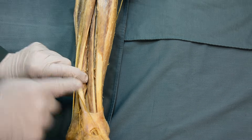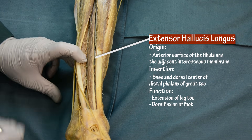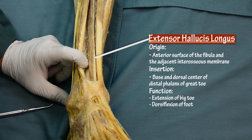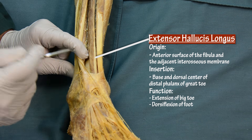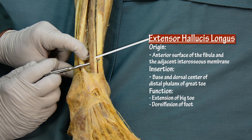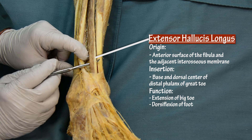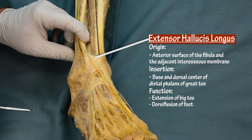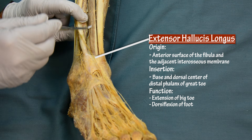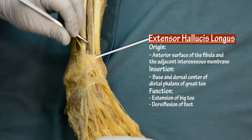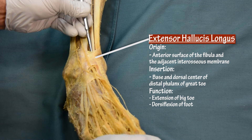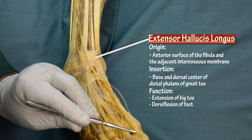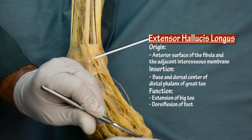The next muscle is the extensor hallucis longus. How do we know that? You only need to trace the tendon of the muscle and bring it to the big toe. The tendon passes under the extensor retinaculum, and as you trace it all the way down you can see it inserts to the distal phalanx of the big toe.